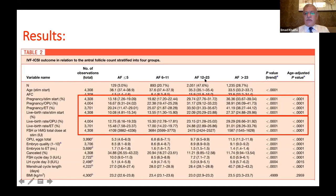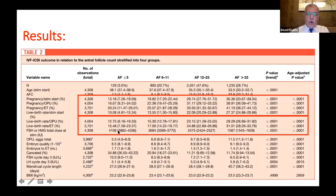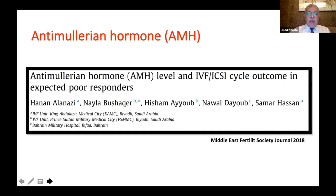Antral follicle count is strongly associated with live birth rate after assisted reproduction, with superior treatment outcomes in women with PCO. There is a gradual increase in pregnancy rate until 15 follicles, then up to 20 or 25, followed by a plateau. With antral follicle count less than 5, 6 to 11, 12 to 23, and above 23, the pregnancy rate ranges from about 20% to 41%. Importantly, higher follicle counts are associated with decreased gonadotropin consumption.